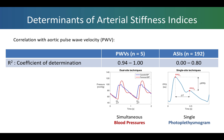When we assessed these techniques on the database, we found that the dual-site techniques — the pulse wave velocities — showed a very high correlation with a reference aortic pulse wave velocity. The arterial stiffness indices extracted from a single PPG waveform exhibited a wide range of correlations, in some cases quite a strong correlation of 0.80.